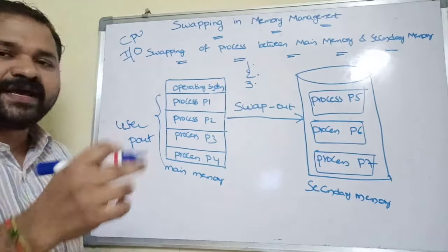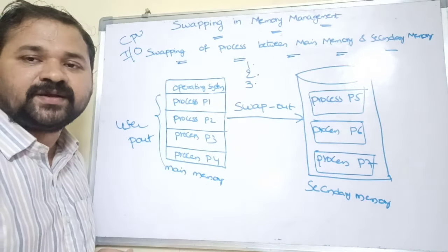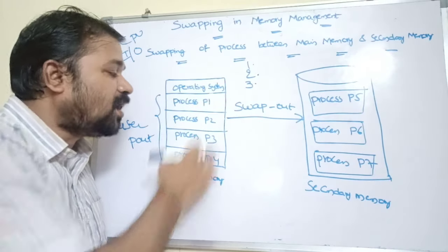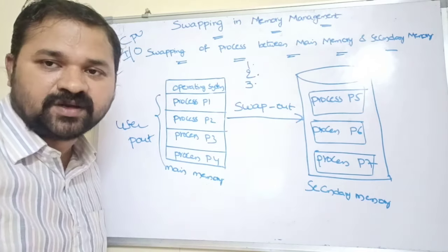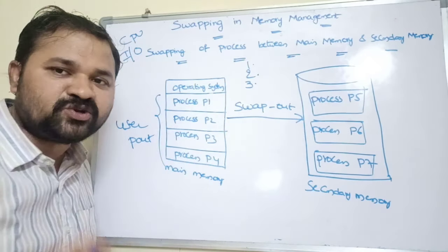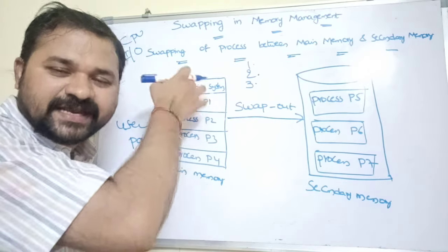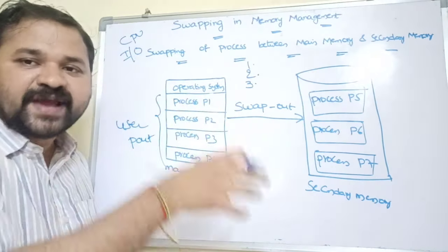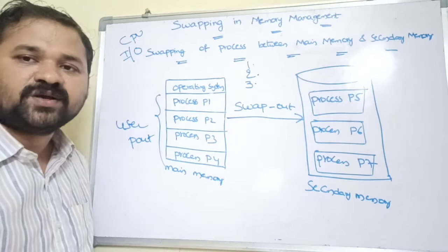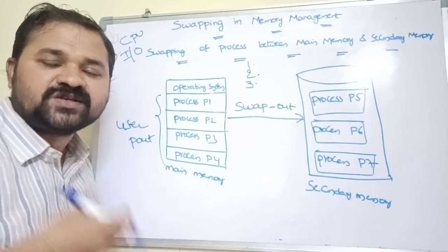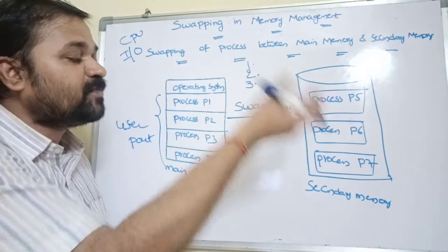Let us take the third scenario. Assume that process P1 is trying to access some operating system area or some other process's area. If process P1 tries to access the operating system or other processes, a protection violation will occur. The operating system will generate a trap or interrupt, and the execution of process P1 will be terminated. The operating system can access any process, but each process should access only its own instructions — P1 should not access P2, P3, or P4. So in this situation, the operating system generates a trap, the process is terminated, and that terminated process is moved from main memory to secondary memory.